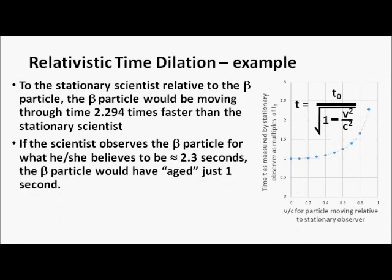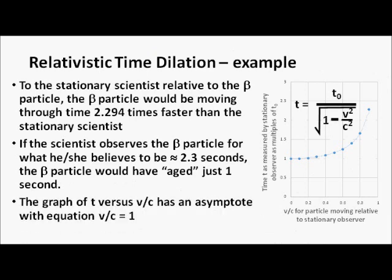If the scientist observing the beta particle measures its movement, he or she would believe the beta particle is moving for approximately 2.3 seconds. However, during that same process the beta particle would have aged just one second, while the scientist would have aged 2.3 seconds. I've also drawn a graph to illustrate how t changes versus v over c, and you can see an asymptote there with the equation v over c equals 1. That's the end of the presentation.